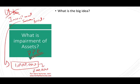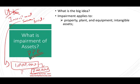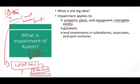If you invest 1 million euros, you expect to make more than 1 million euros. But now your investment basically went down to 200,000. So that's the big idea — your assets lost utility. Impairment applies to property, plant, and equipment; intangible assets; goodwill; and investments in subsidiaries, associates, and joint ventures.